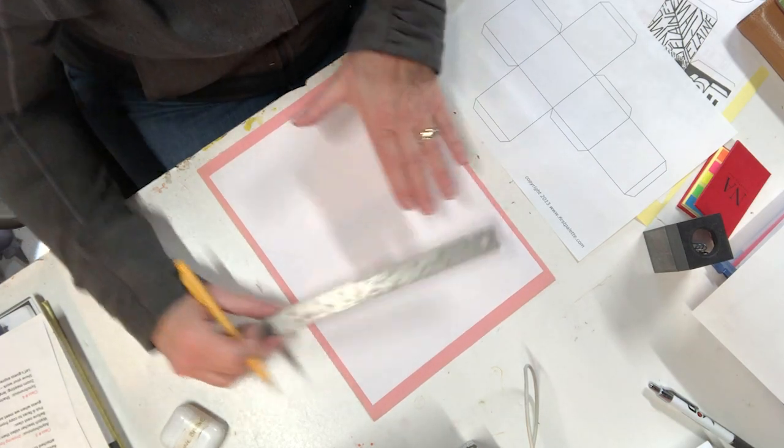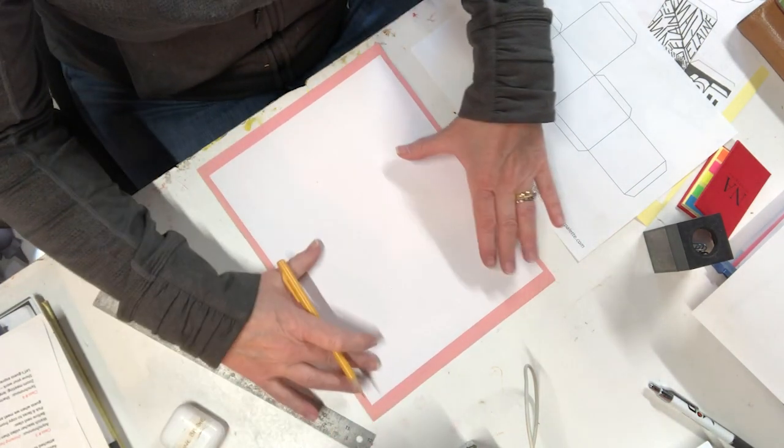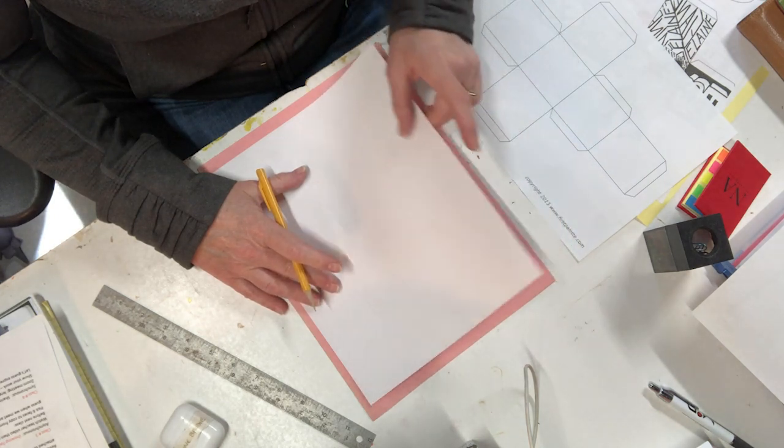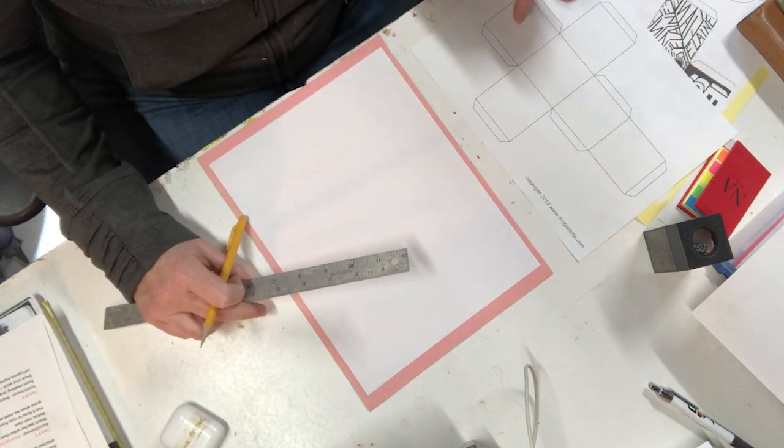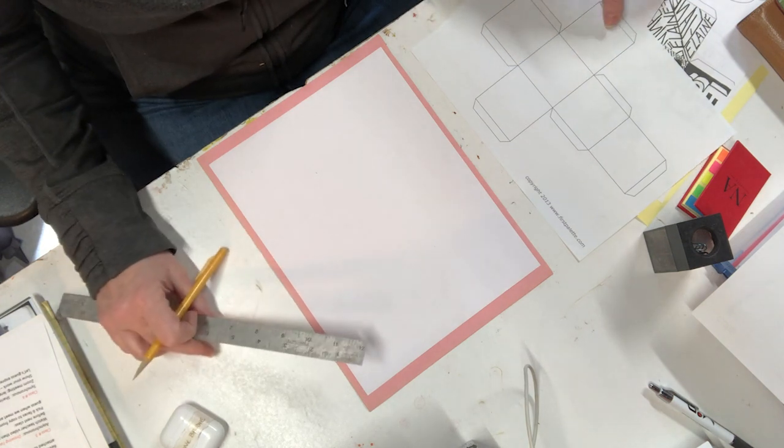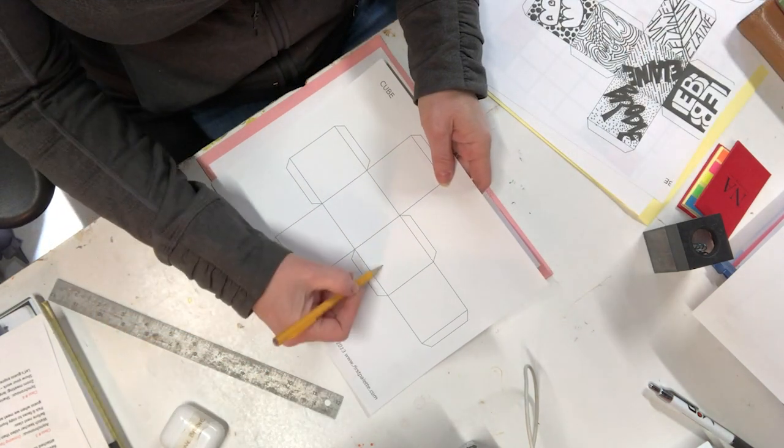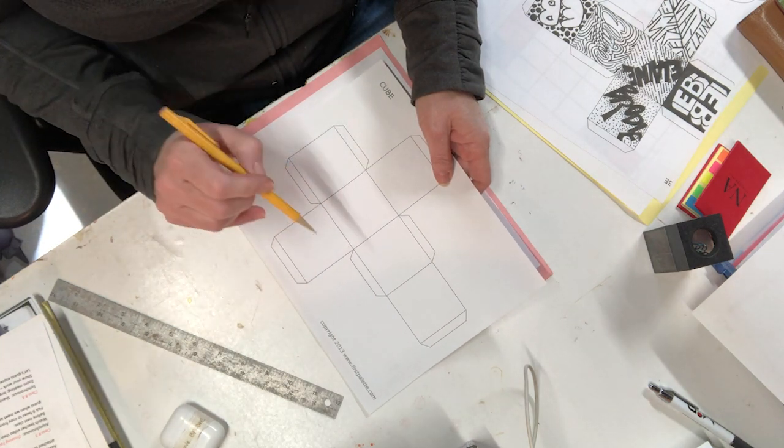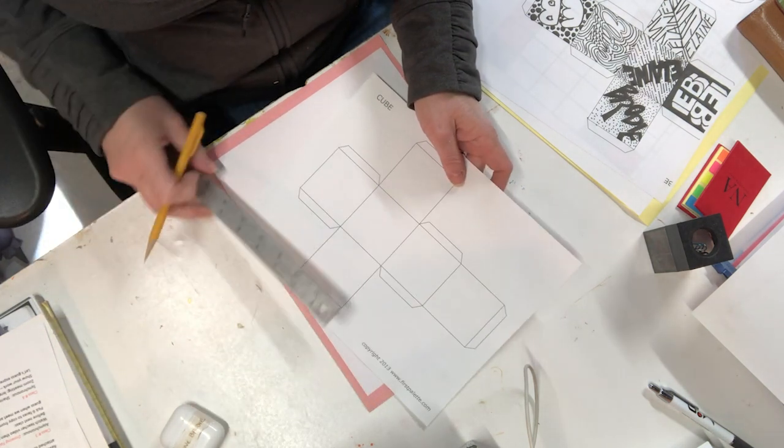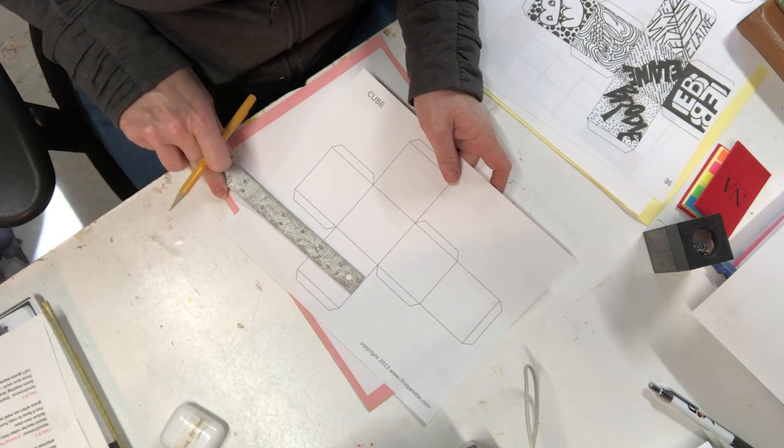Get a piece of paper. The idea is that we want four squares this way and three squares this way that are all the same size, and these are two and a quarter inches.